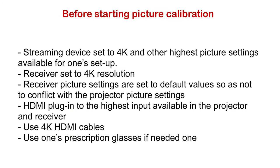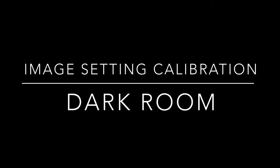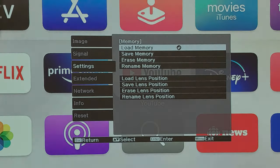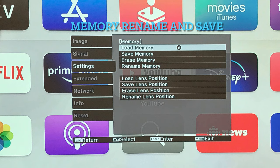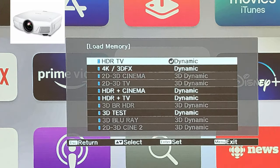For HDMI video range, select Normal to avoid excessive brightness. Before starting picture calibration, make sure to set the streaming device to 4K and other highest picture settings available for your setup. Set the receiver to 4K resolution. Receiver picture settings should be at default values so as not to conflict with the projector picture settings. Use HDMI plugged into the highest input available in the projector and receiver. Use 4K HDMI cables. The Epson 4010 projector has 10 picture memory setting slots.